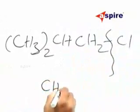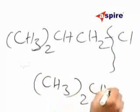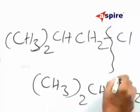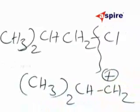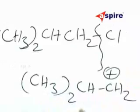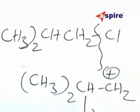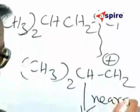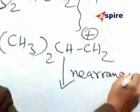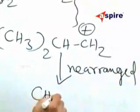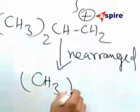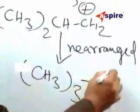The carbocation that you are getting here is this particular carbocation. Now this carbocation is going to get rearranged to the more stable carbocation, namely CH3 thrice C plus.